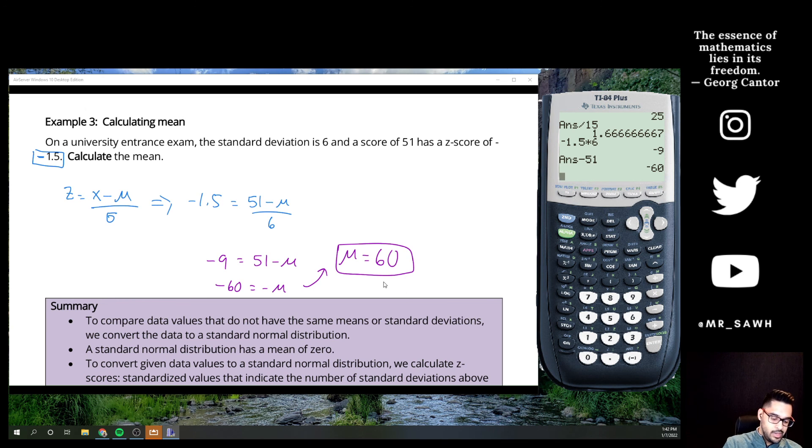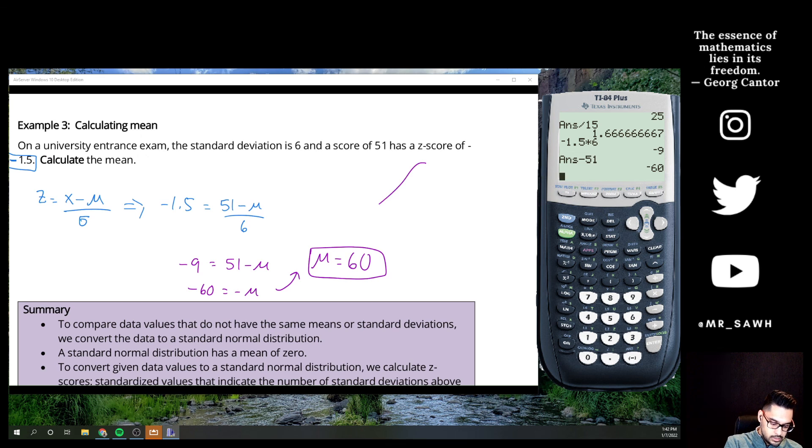Negative 60 is equal to the negative of the average mark, so the average mark must be 60%. So the average of this exam—and again, I can draw you a picture. My average goes in the middle, that's 60. And one standard deviation in the left or negative direction would be 54, right, since my standard deviation is 6.